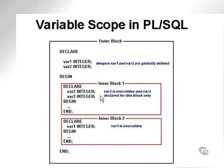Vars 2 and 3 are declared for this block only, inner block 1. And they will actually override any definitions of parent blocks. In other words, the definition of var2 will override the definition of var2 from the outer block. What this means is that var2 being declared as having local scope for this inner block 1 can be changed in inner block 1.